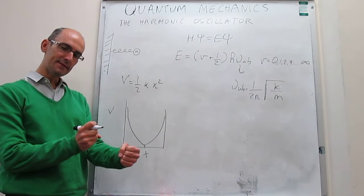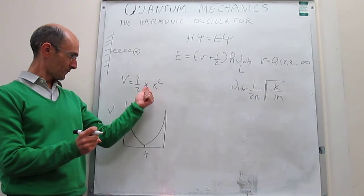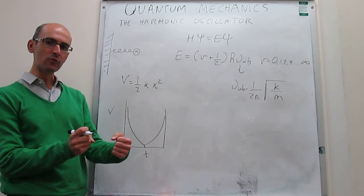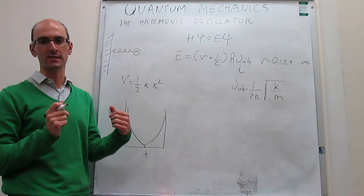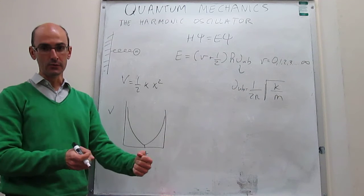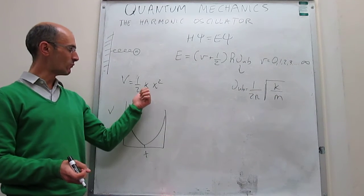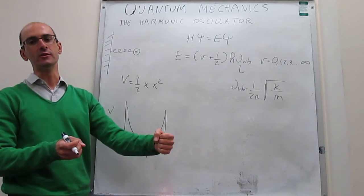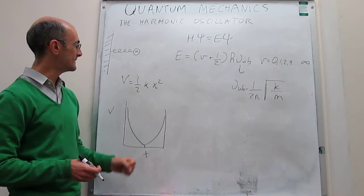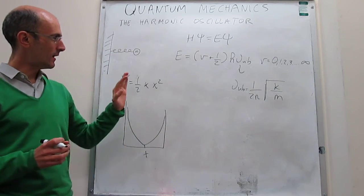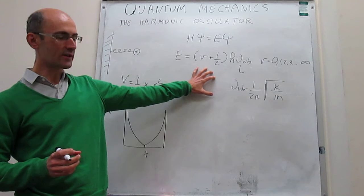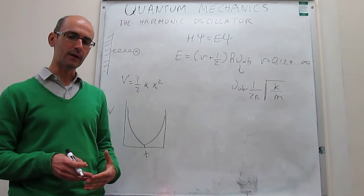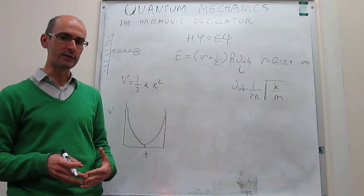If the spring is very stiff, the force constant will be very high and slight deformations around the equilibrium will give rise to very sharp increases in energy. If the spring is very loose, the force constant will be very low and it doesn't take much energy to deform the spring. With this energy expression, we can now establish a comparison with what we obtained for the particle in a 1D box model.